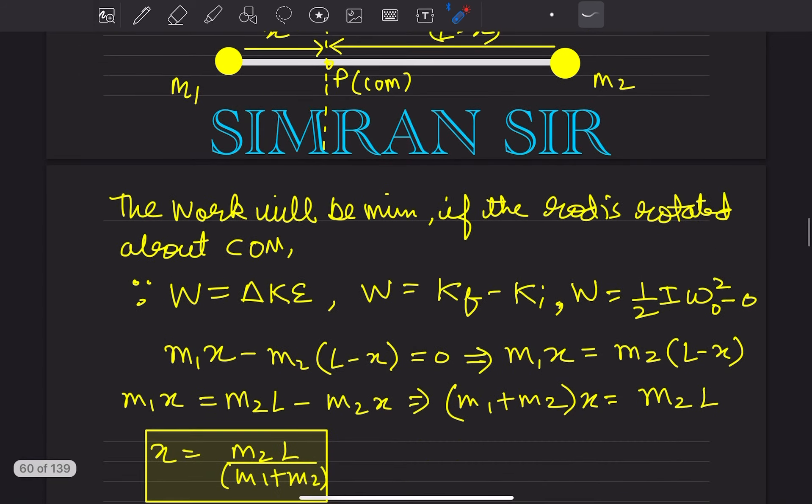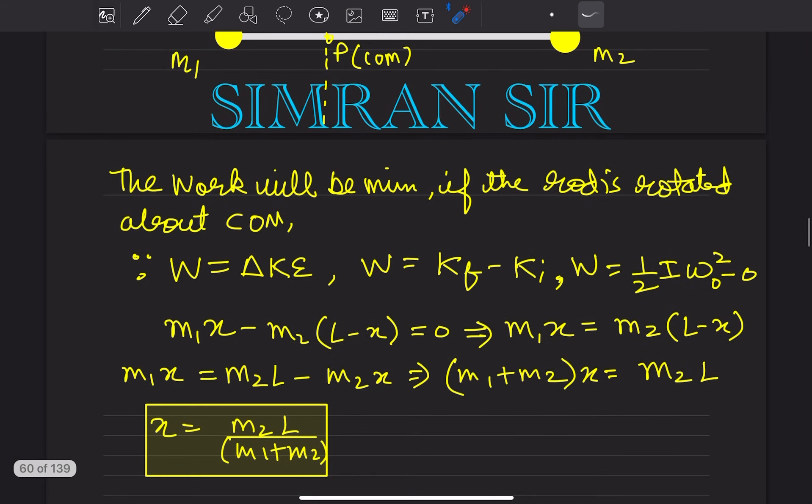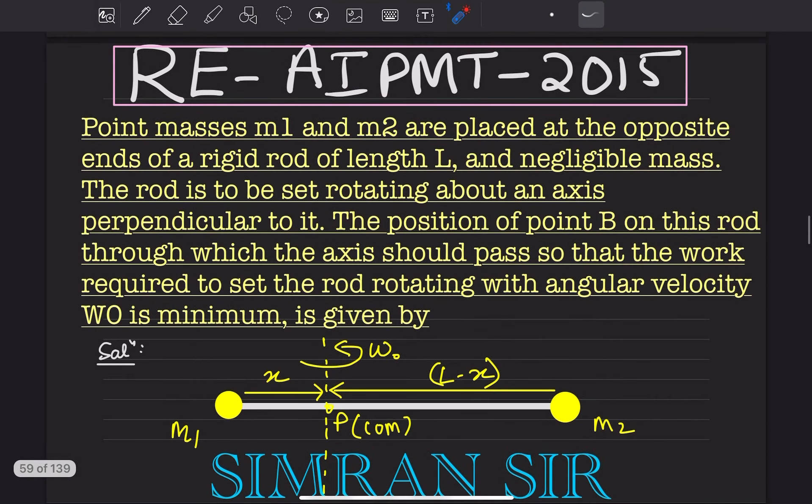Now let's solve this equation. Moving to the right-hand side, this becomes positive. Multiplying out m2(l minus x) gives m2 l minus m2 x. Moving minus m2 x to the left-hand side gives (m1 plus m2) times x. So x equals m2 l over (m1 plus m2). This will be your final answer. Thank you for watching.